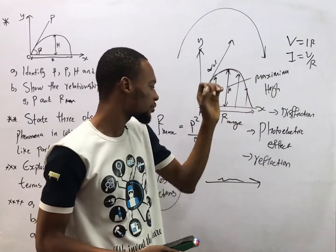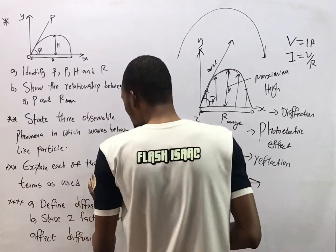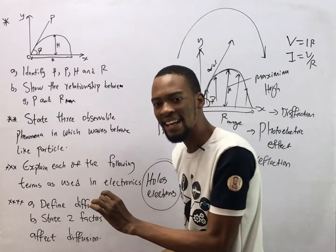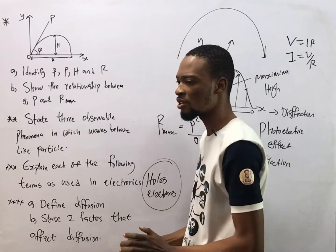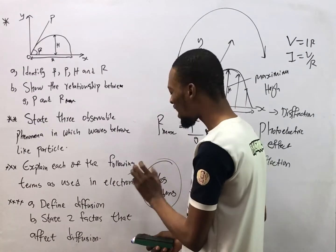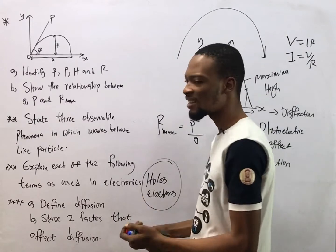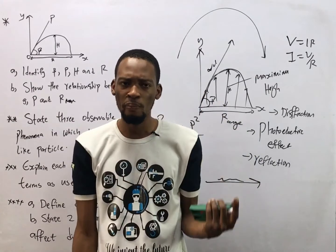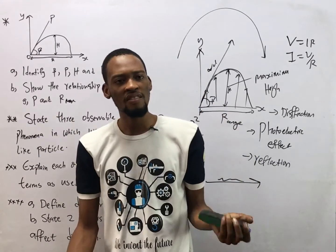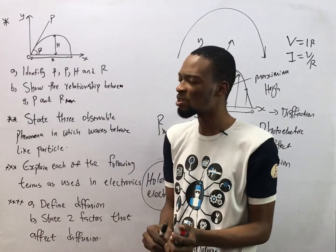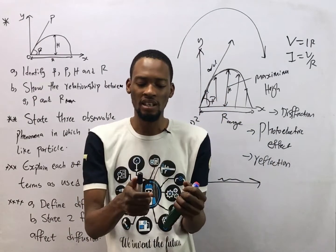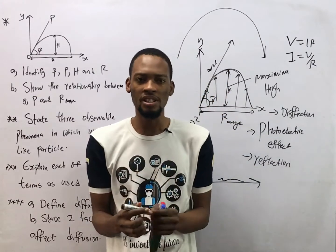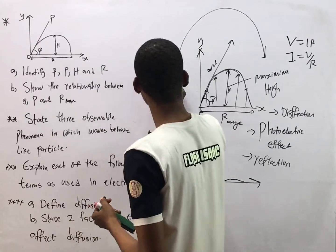In semiconductors, the charge carriers are holes and electrons. Holes are positive charge carriers and electrons are negative charge carriers, forming what is referred to as an electron-hole pair. Semiconductors generally don't conduct unless impurity is added to them. The process of adding impurity to semiconductors to make them conduct electricity is referred to as doping.